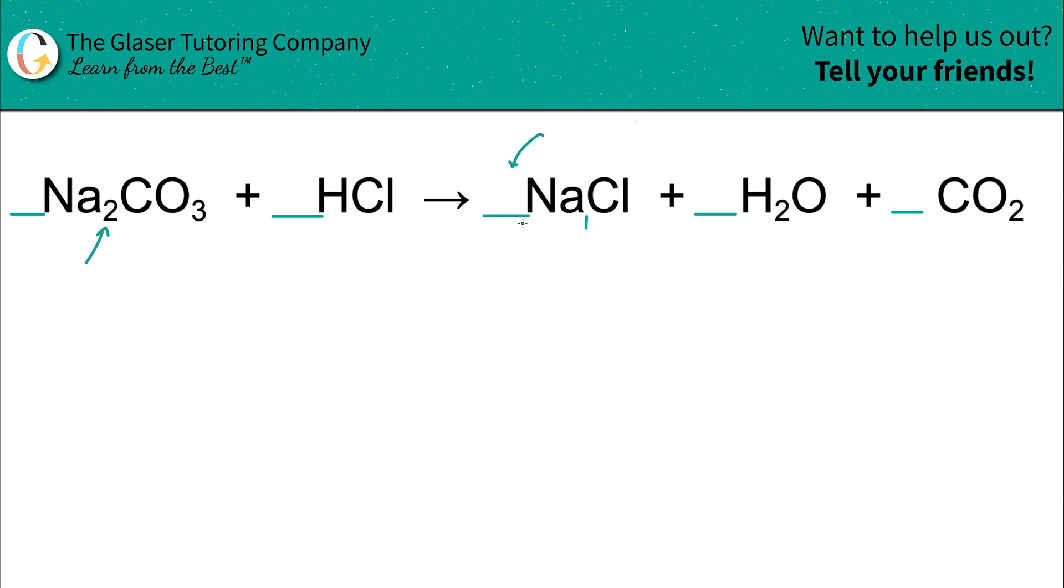So now you're always going to place in a coefficient, generally speaking, on the lower side. In other words, you're going to place in a value of 2 here, and the reason being is because now this is telling you that you have two sodium chlorides. So you have one here, and then you have another one right there. So how many sodiums do you have in total now if you have two sodium chlorides? Two. And that balances now the two sodiums I had in the sodium carbonate. So that's balanced. Sodium's done.